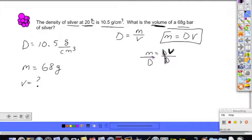and it remains on the bottom half of the fraction, underneath mass. So volume equals mass divided by density. And then we can plug in our knowns. The mass is 68 grams, divided by the density of 10.5 grams per cubic centimeters.